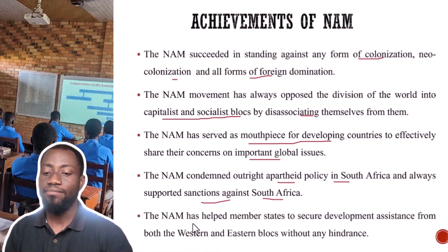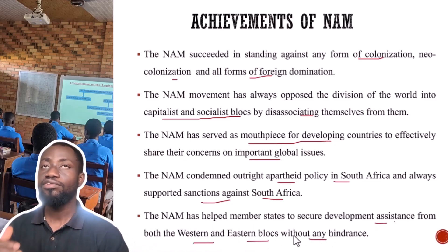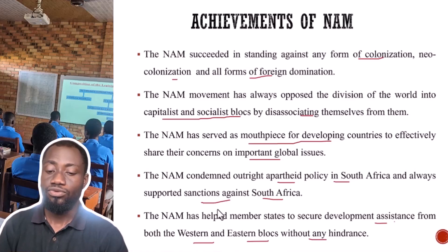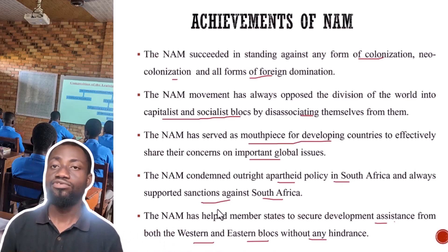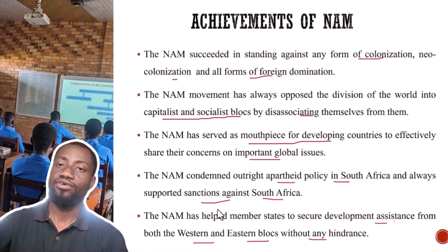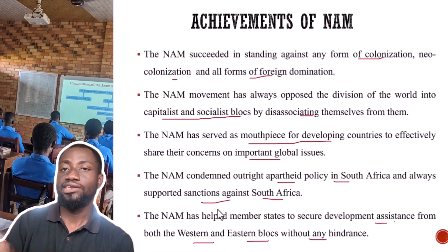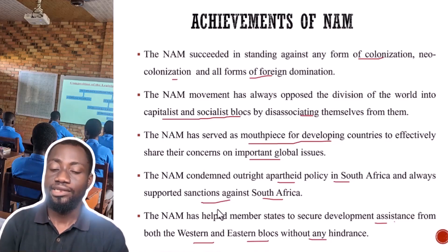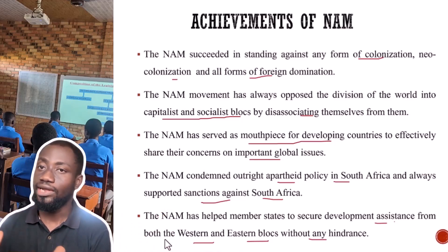The NAM has helped member states to secure development assistance from both the Western and Eastern blocs without hindrance. Because these members did not state clearly which bloc they belonged to, they were able to secure financial assistance from both. For instance, Ghana, even though at a point took a stand somewhat aligned with Russia, Nkrumah also managed to secure funding from the US — specifically for the building of the Akosombo dam from the US company Kaiser. They were able to deal with both blocs, whereas if you align with one, you cannot.